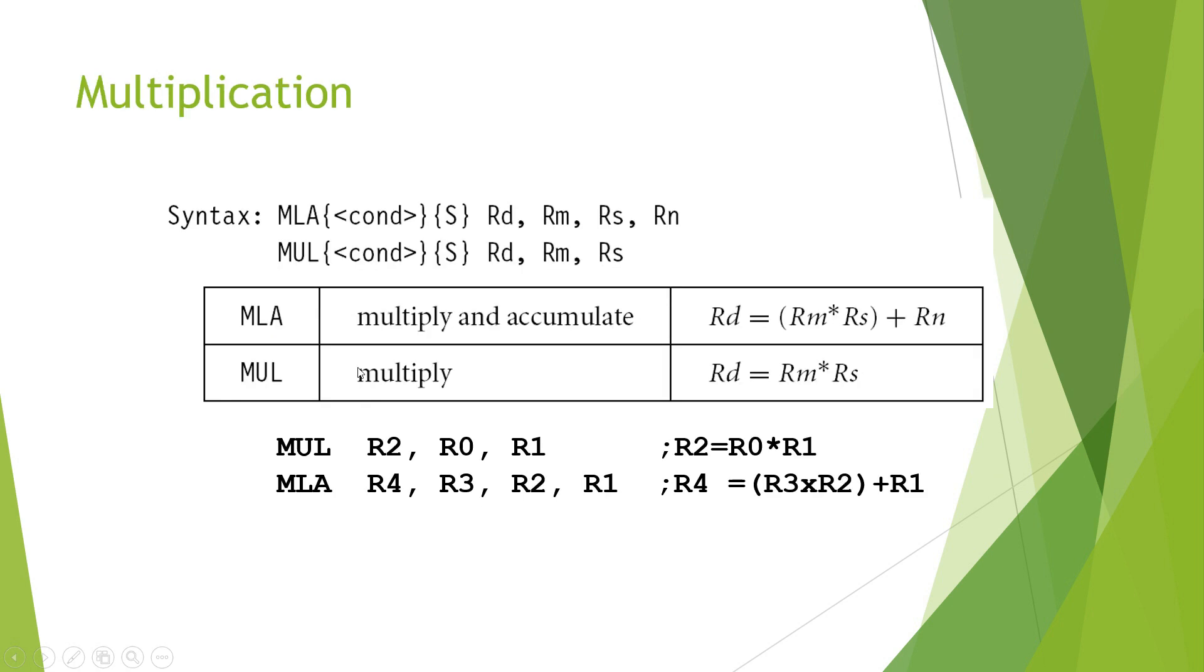The next instruction is multiplication. We have two multiplication instructions. One is MUL. The other one is MLA. MUL stands for multiply. That means it multiplies the contents in the register R0 and R3 and the result is stored in R2.